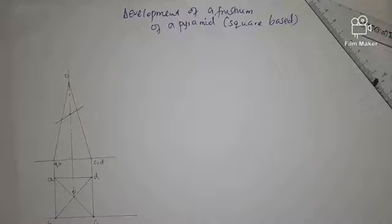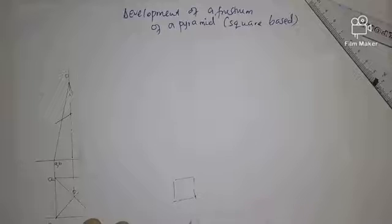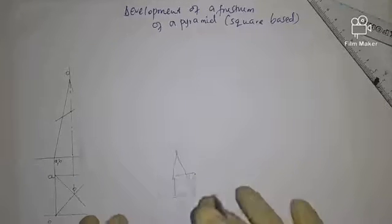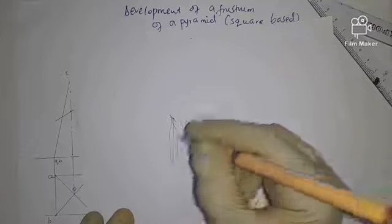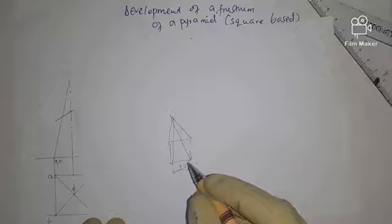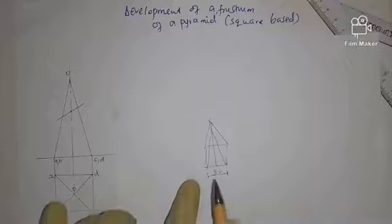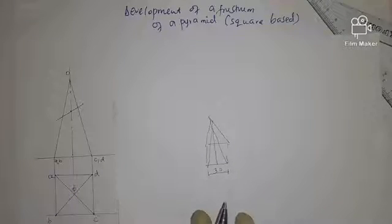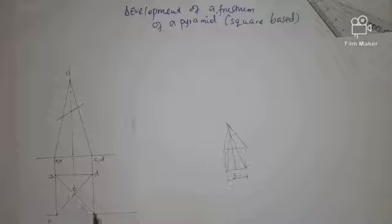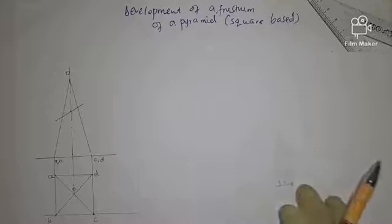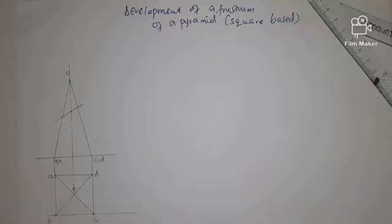So we have truncated that and we have gotten the first part, the frustum, and that is the one we are going to project so that you come up with a development. Now we can't say that from here to here is a true length because if this is our square, we expect our pyramid to be at the center. And now this is the distance we took as that, so we cannot say that we are going to have this one as our true length. That means we need to get our true length and our true length is this vertical line. How do we get it? We are going to make OC to be parallel to the XY plane.